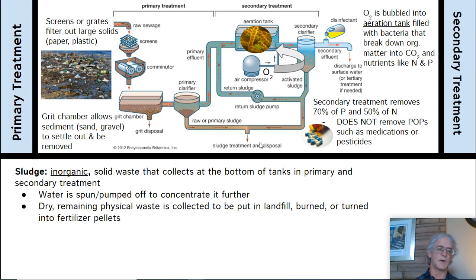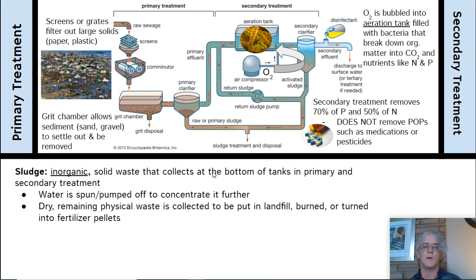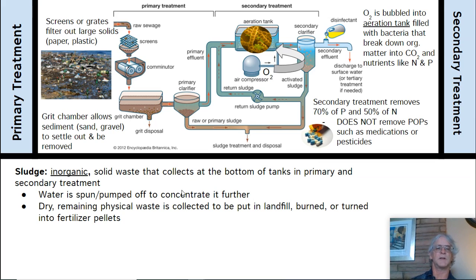The sludge is dried if possible, collected, and put in a landfill or burned. Sometimes it's formed into fertilizer pellets. At Hyperion, they load it into large trucks and take it up to Kern County, where it's applied to agricultural fields growing crops like cotton — not anything that's going to go into anyone's mouth.